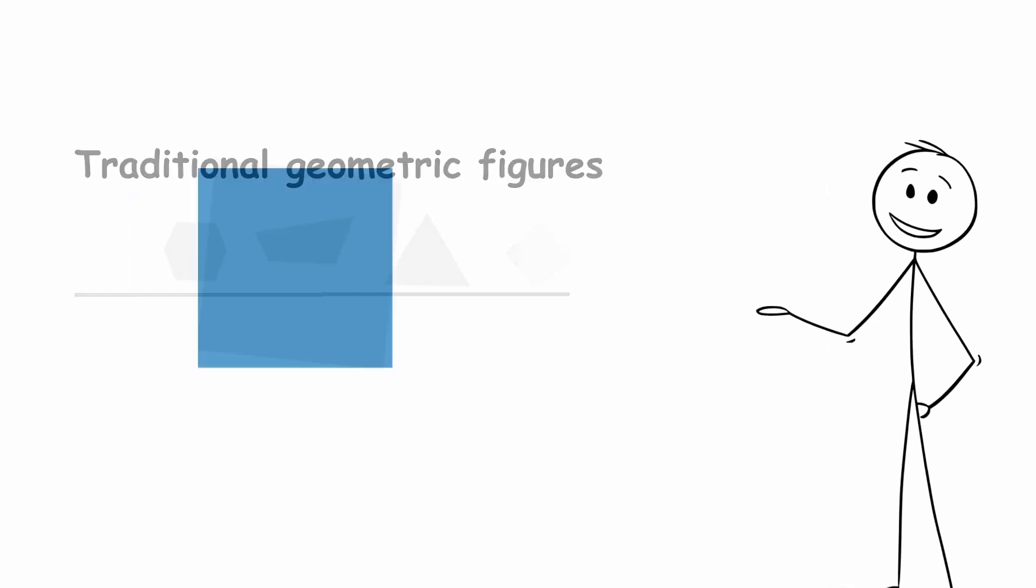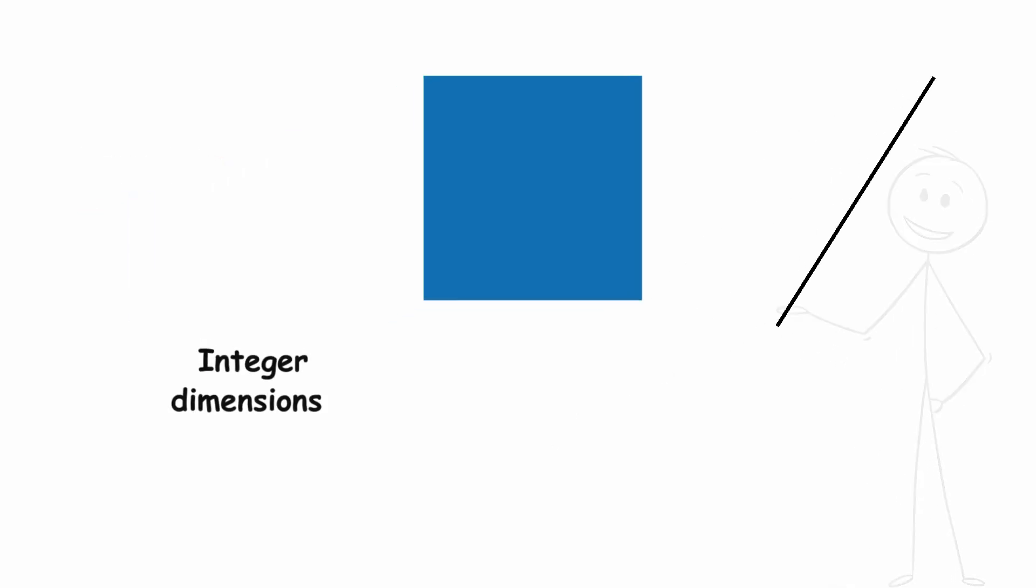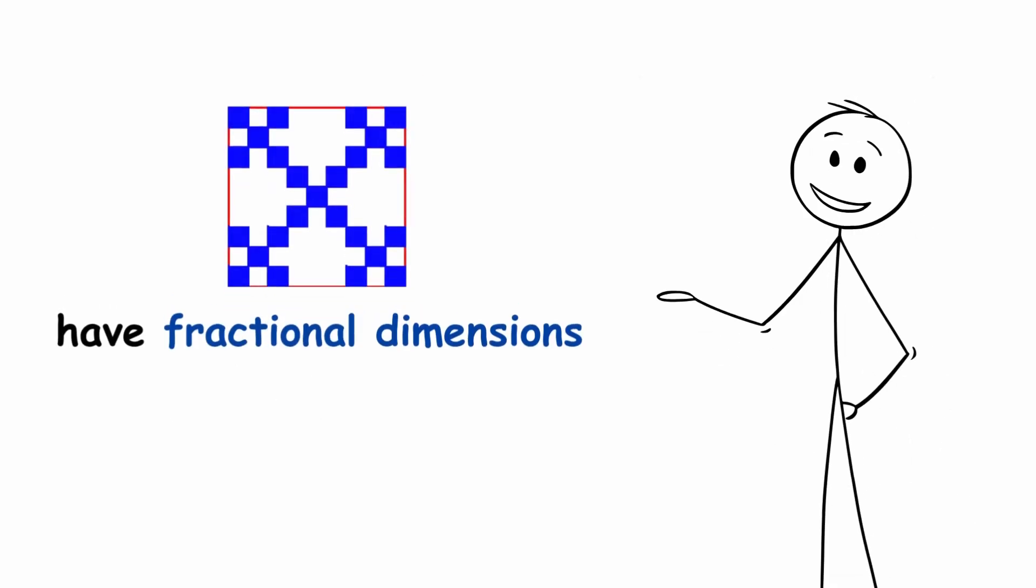Traditional geometric figures, such as a square and a line, have integer dimensions of 2 and 1 respectively. Fractals have fractional dimensions.